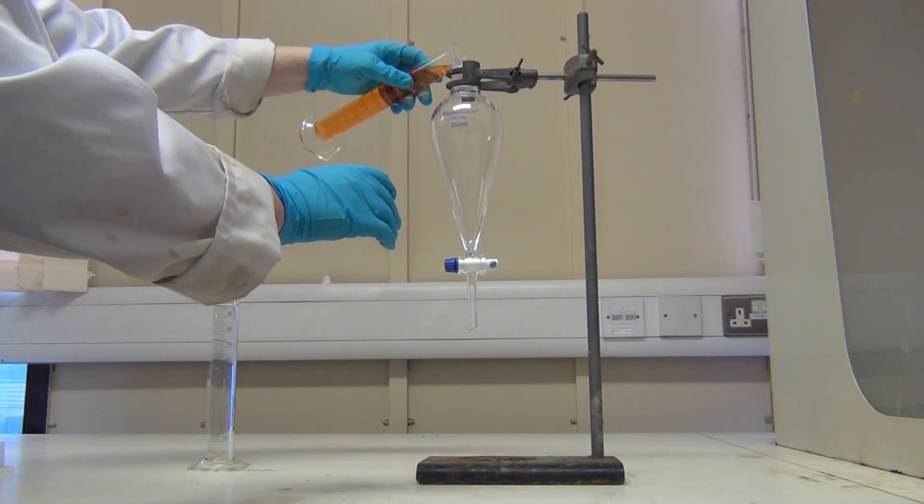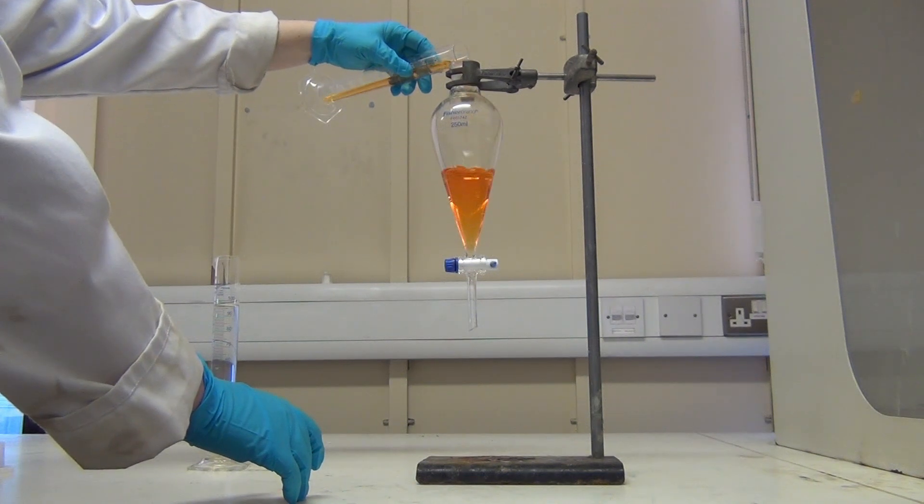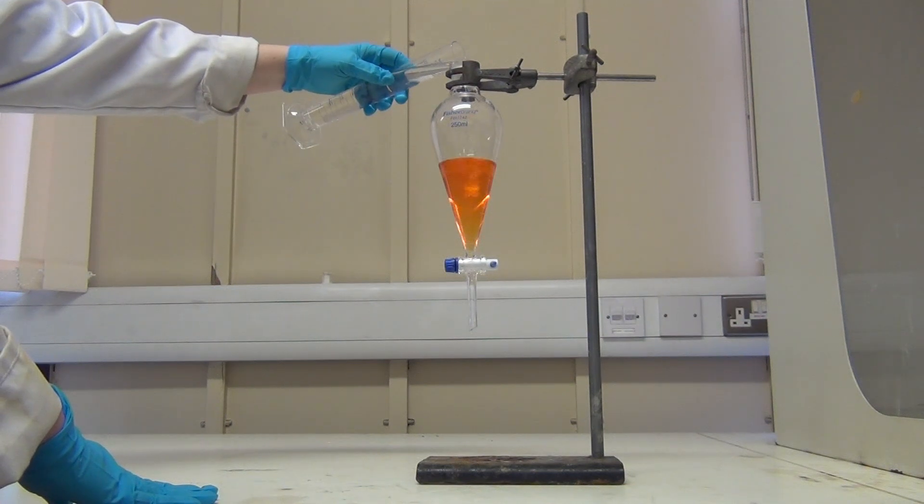When pouring liquids, you may wish to use a measuring cylinder or long-stemmed funnel to prevent spillages. When both the solution and the extraction solvent have been added, layers will begin to form.